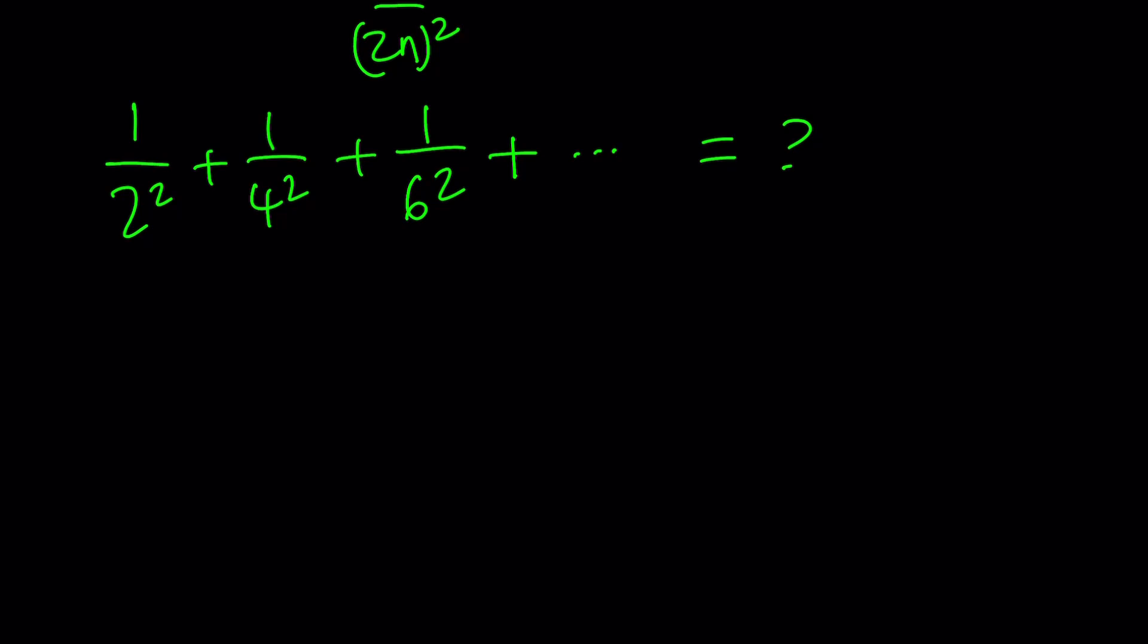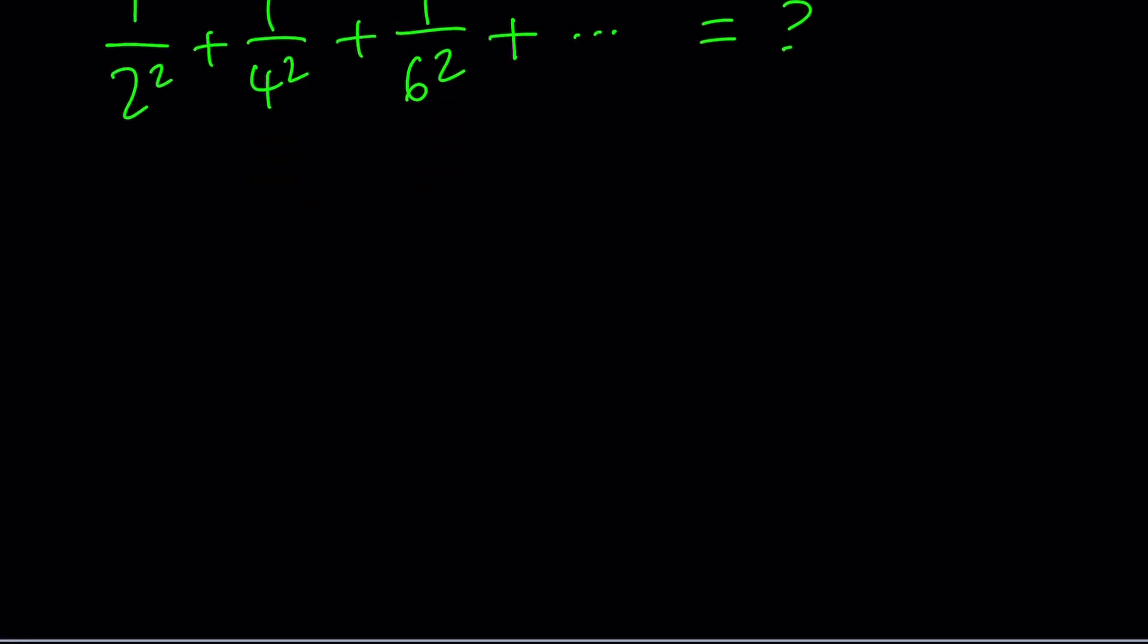We're going to factor out a common factor. Well, 2, 4, 6 all have 2 in them, and when you square them that turns into 2². So we can write 1/4² as 1/(2²·2²), and 1/6² as 1/(2²·3²), and so on.